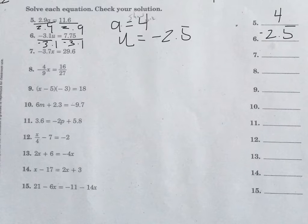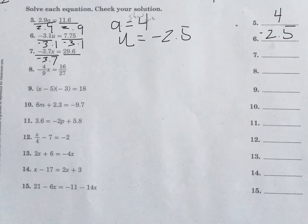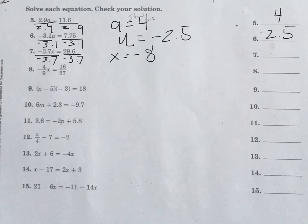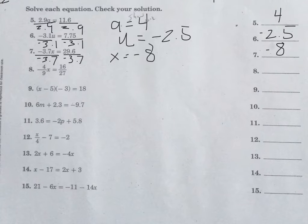You do the same thing for number 7. Divide by negative 3.7 on both sides to get x by itself. Then you have that x equals negative 8, since 29.6 divided by negative 3.7 gives that result.